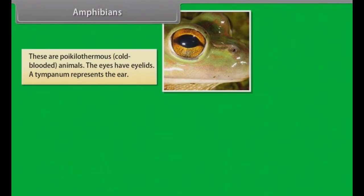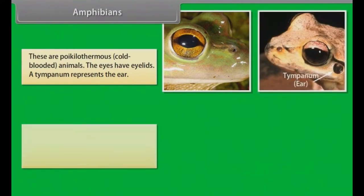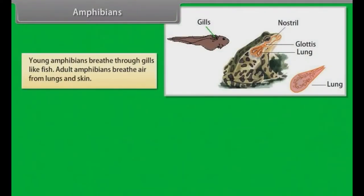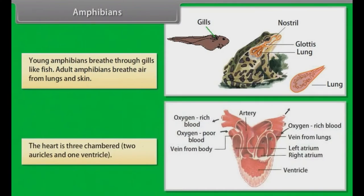The eyes have eyelids. A tympanum represents the ear. The alimentary canal, urinary and reproductive tracts open into a common chamber called the cloaca, which opens to the exterior. Young amphibians breathe through gills like fish. Adult amphibians breathe air from lungs and skin.